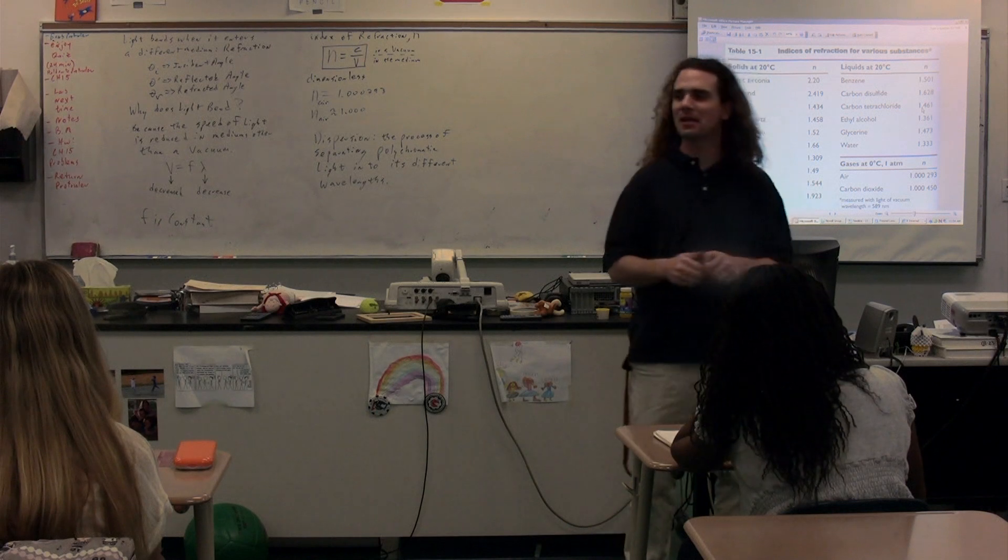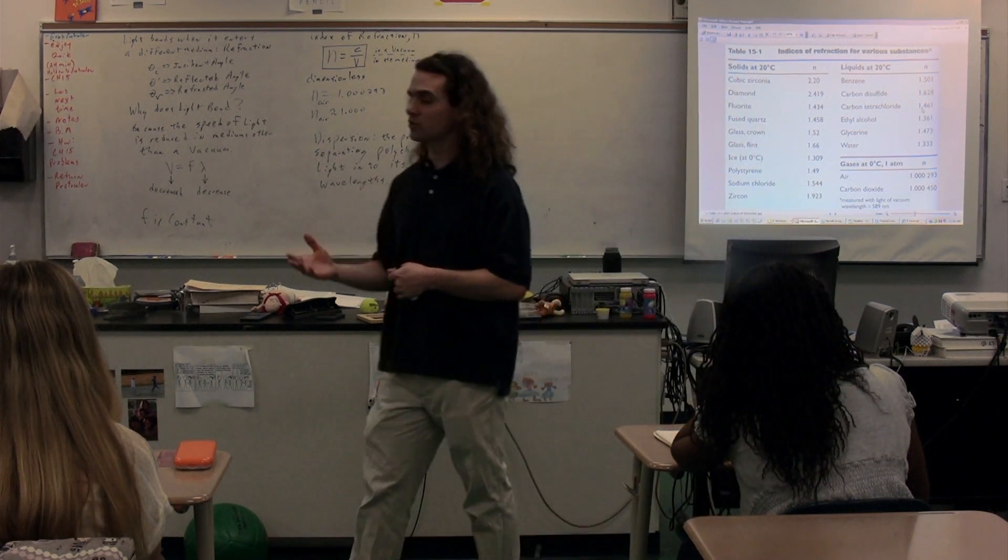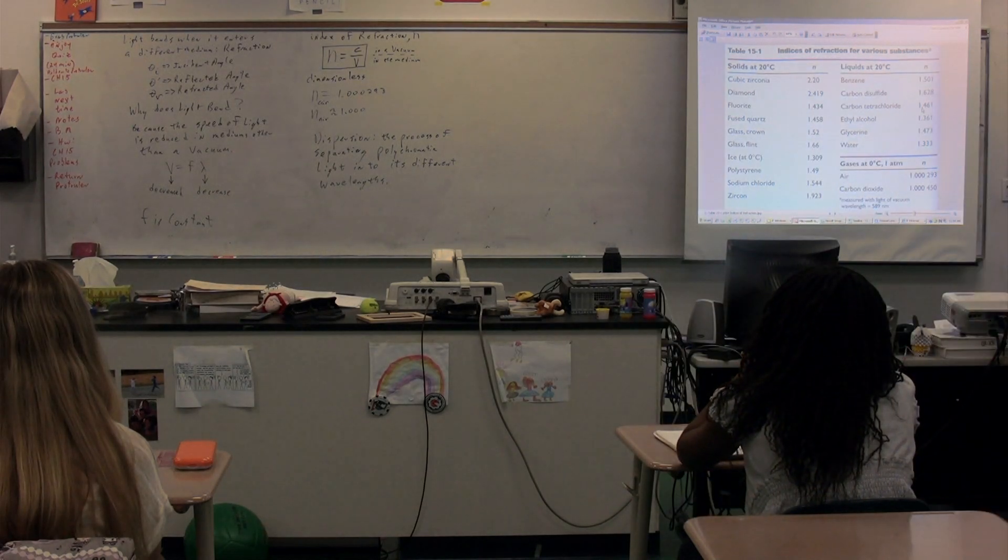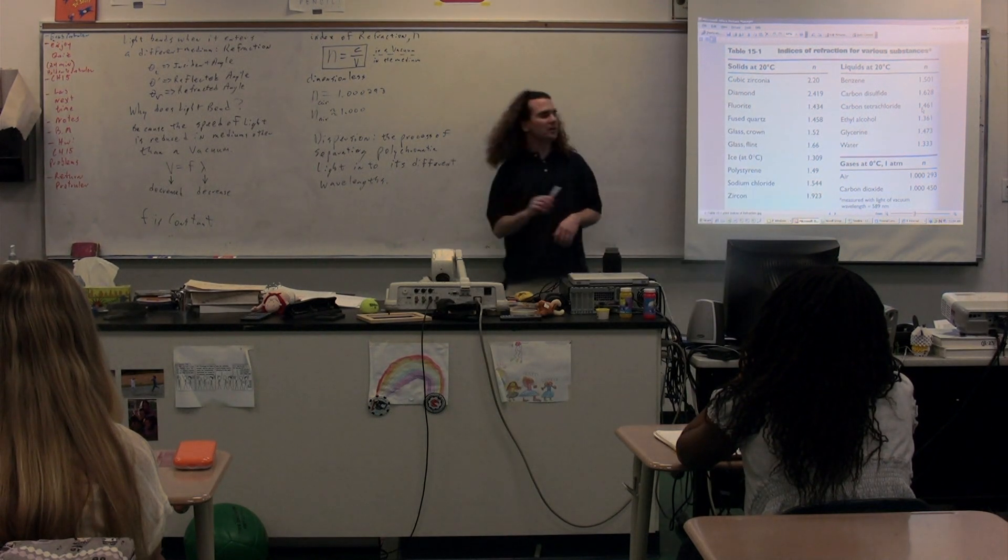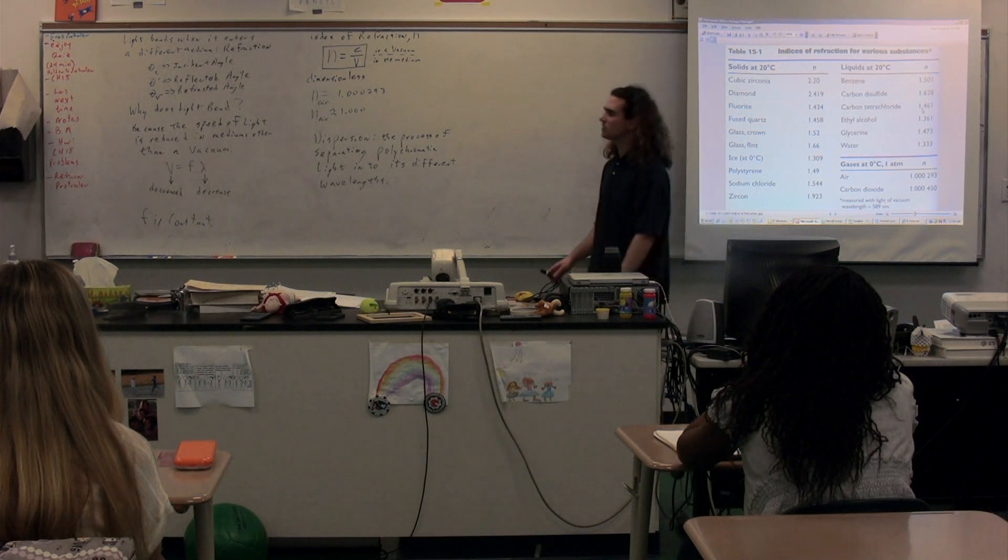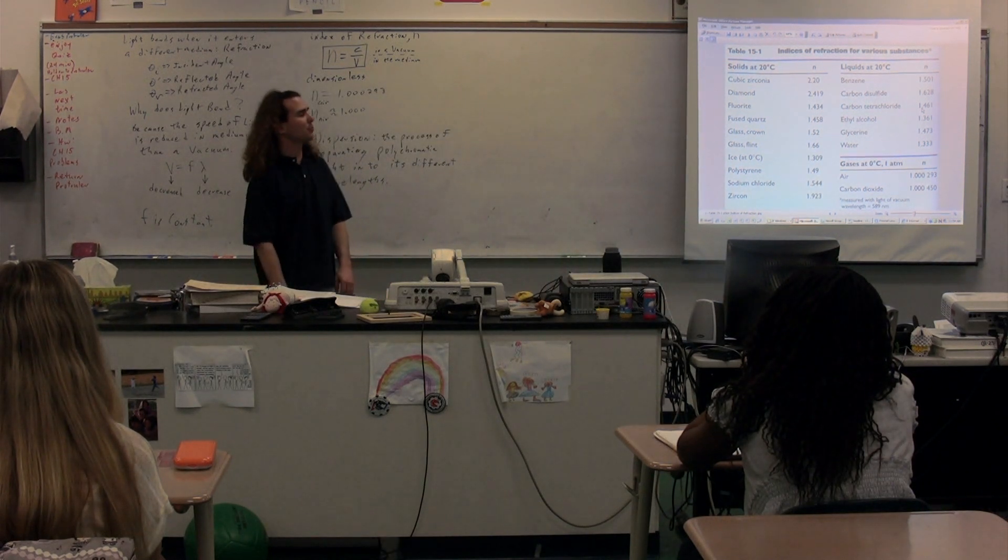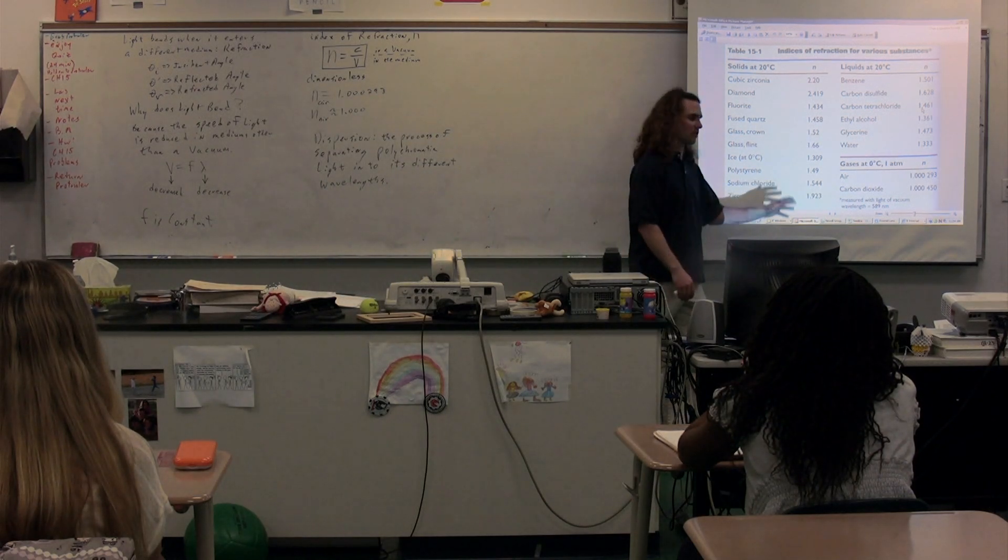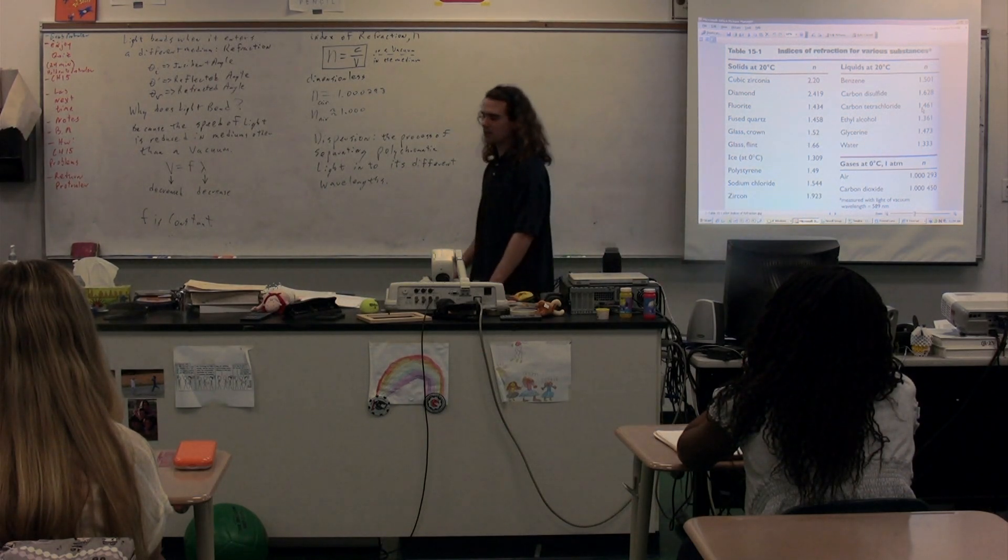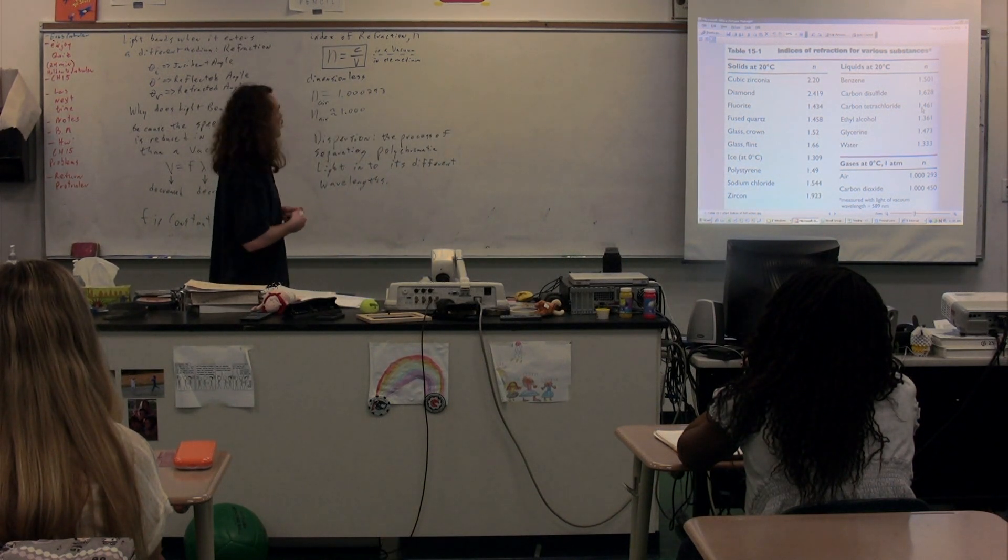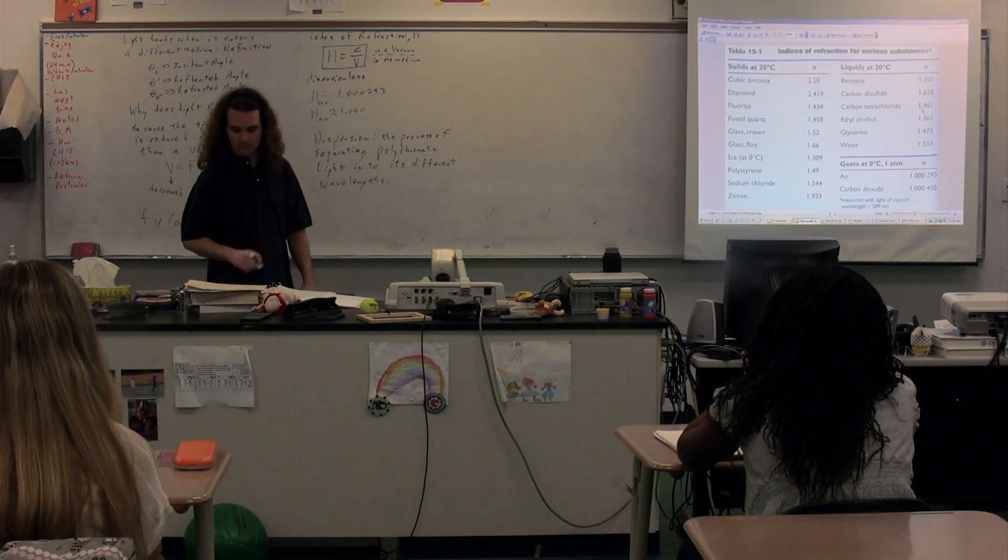Polychromatic light simply means light with many different wavelengths or many different colors. The idea here is light can be dispersed because different wavelengths have different indices of refraction. If you send polychromatic or white light at a prism, it will be separated into its constituent wavelengths or different colors because different colors will have different indexes of refraction and therefore will be bent more or less than others.